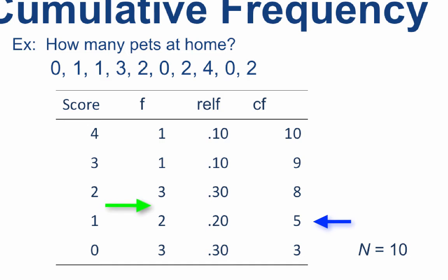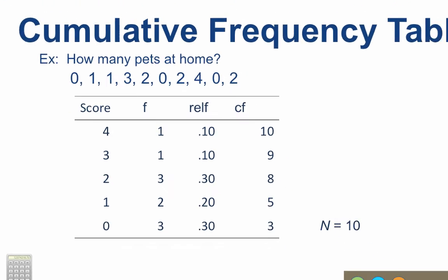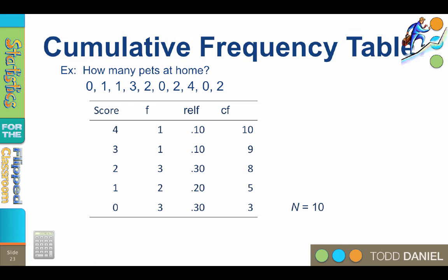To the 5, we add 3, the next frequency value, and get a total of 8. 8 plus 1 equals 9. 9 plus 1 equals 10. That is our final cumulative frequency value at the top of the column.